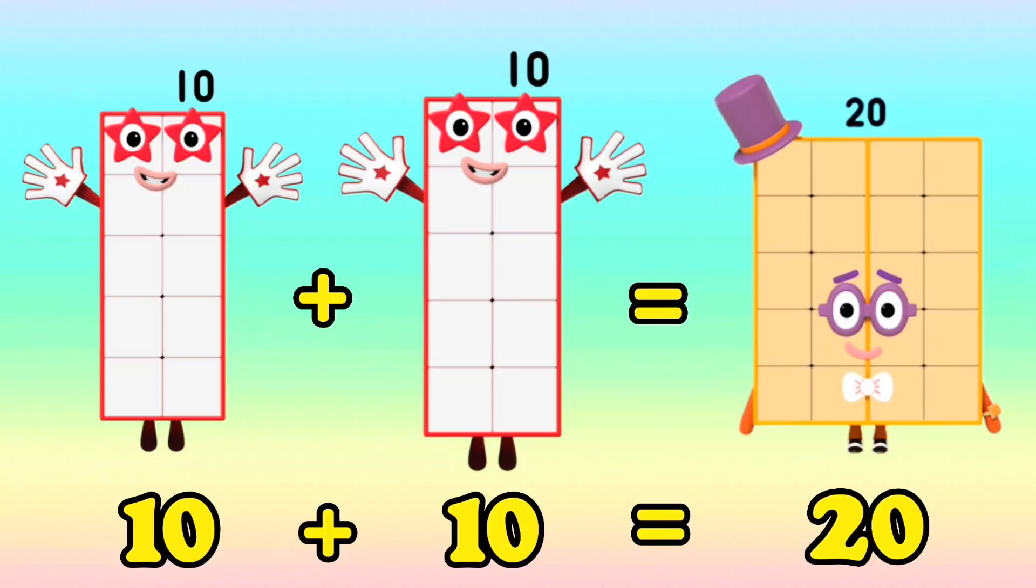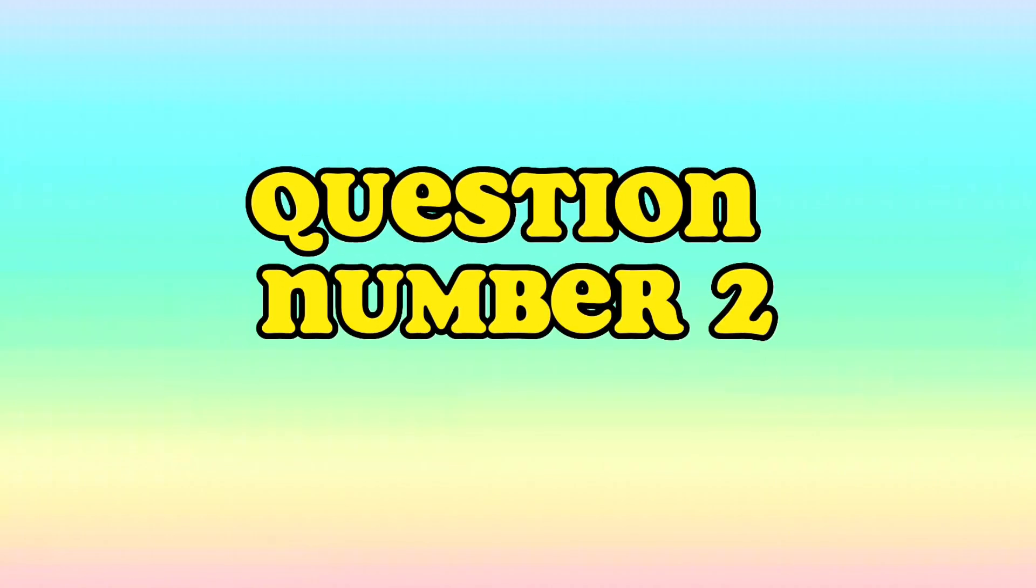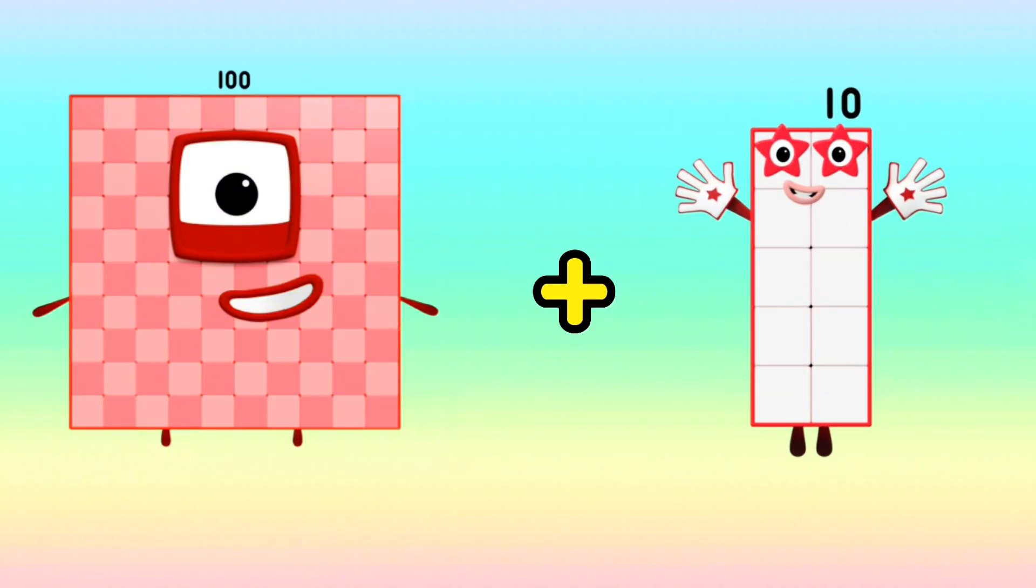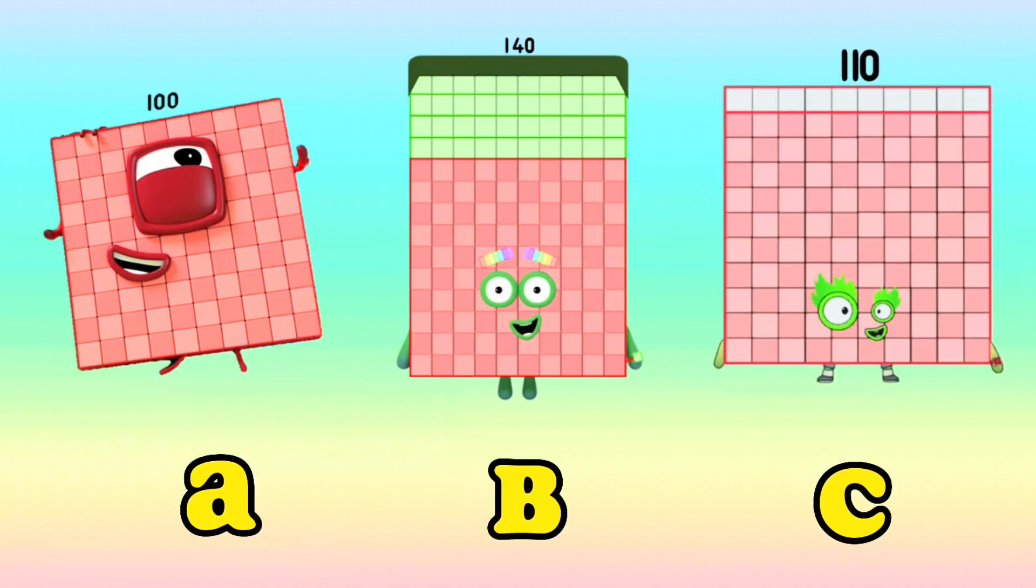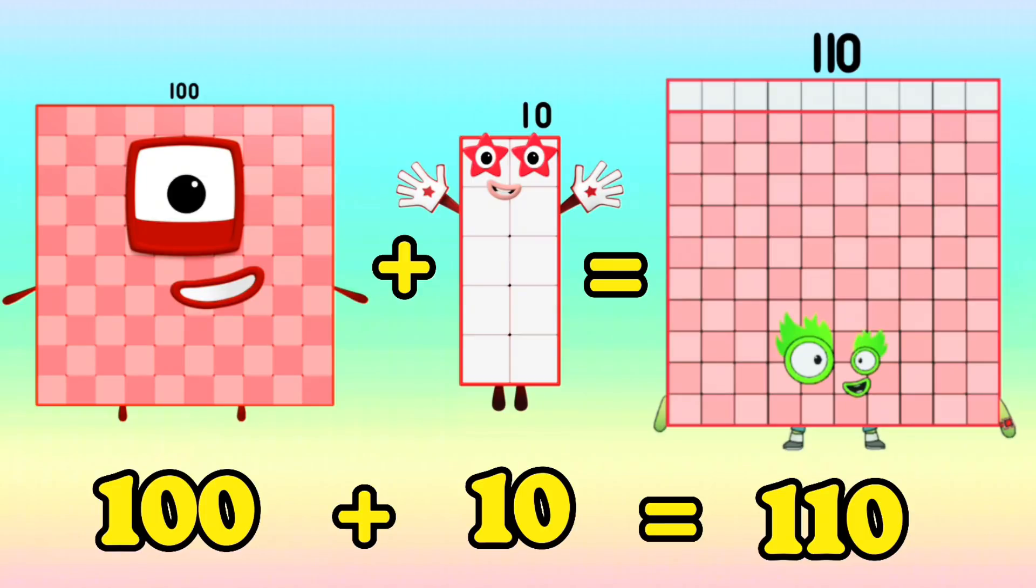10 plus 10 is equals to 20. Question number two: 100 plus 10 is equals to... Is it letter A: 100, letter B: 140, or letter C: 110? If your answer is letter C, which is 110, then you're right. 100 plus 10 is equals to 110.